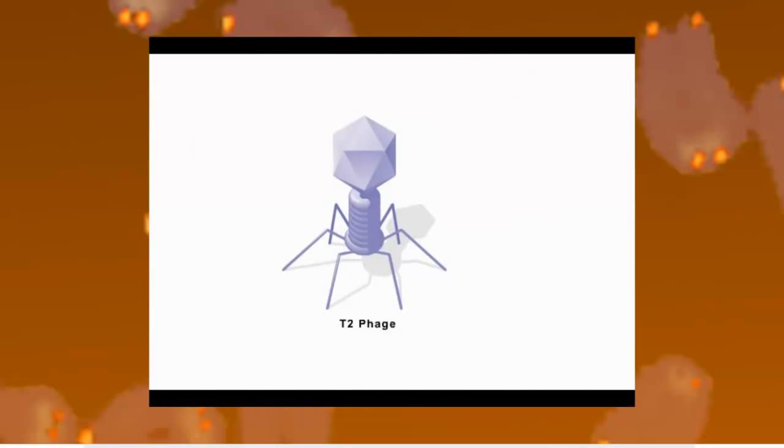The phage, which infects E. coli, consists of a head, sheath, tail, and base plate made of different proteins.